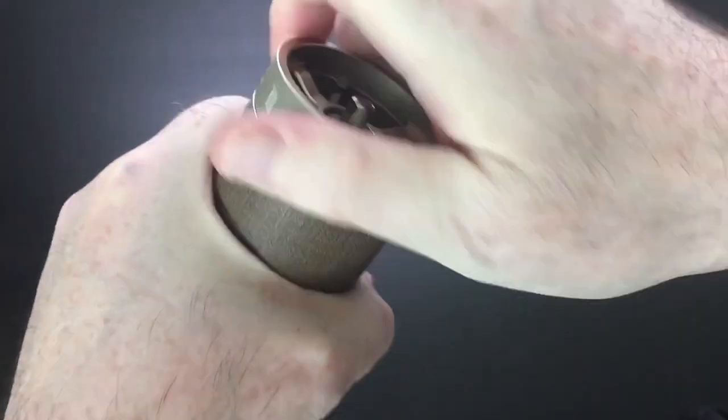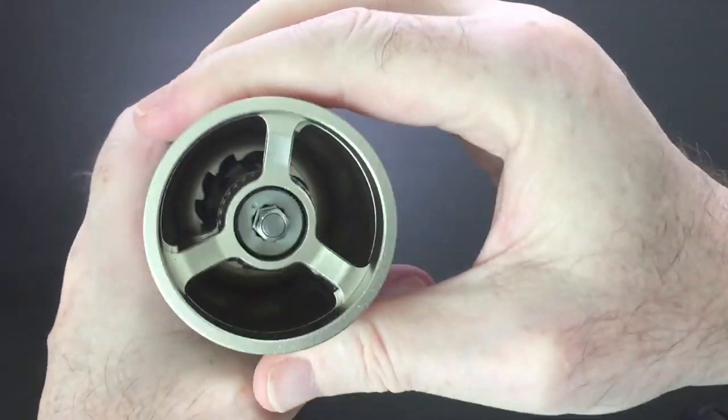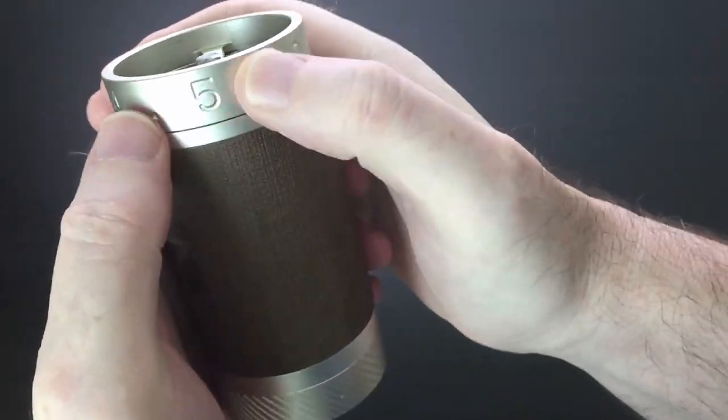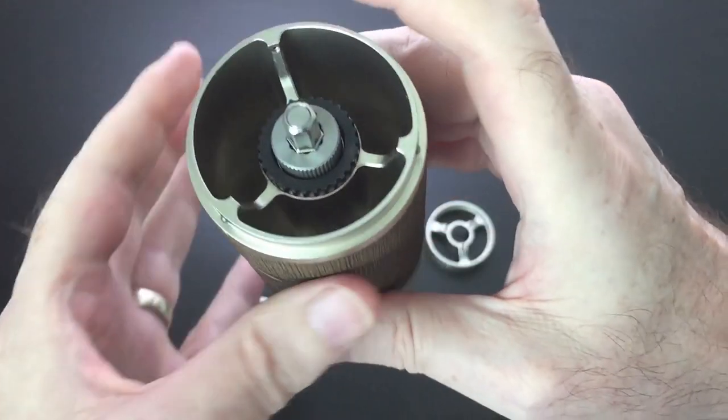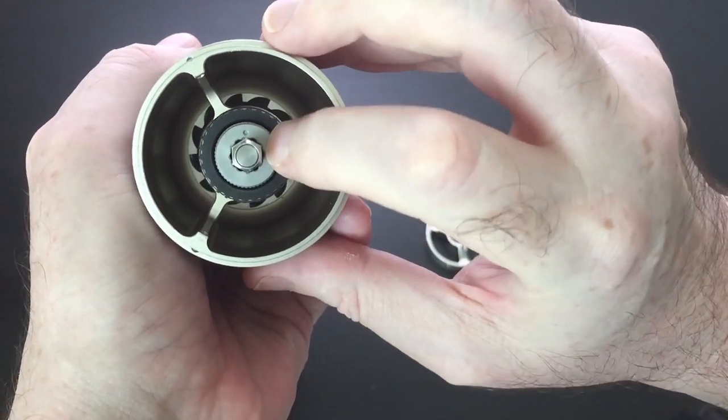Okay, that's your burrs fully open. Take off the adjustment dial, just pop that off. The reason you need your burrs fully open is because the thumb nut will not loosen unless you've got your burrs open 100%.